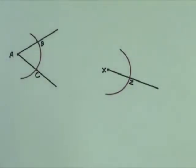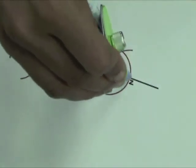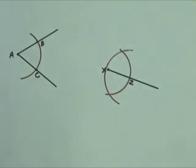Without changing the compass width, place the compass point on Z and draw an arc that intersects the previous arc. Label one of the points of intersection as Y.